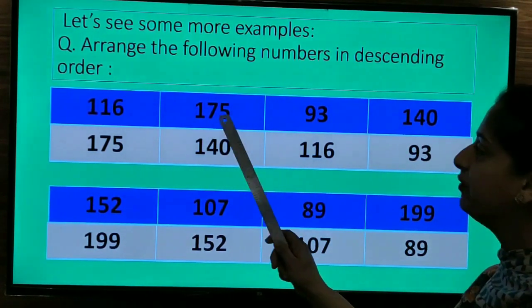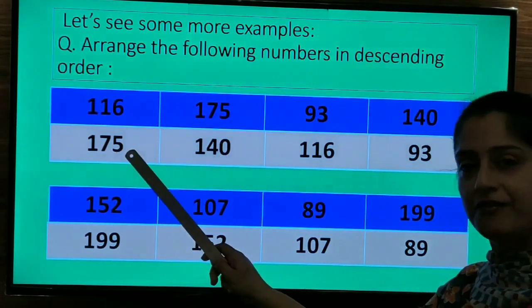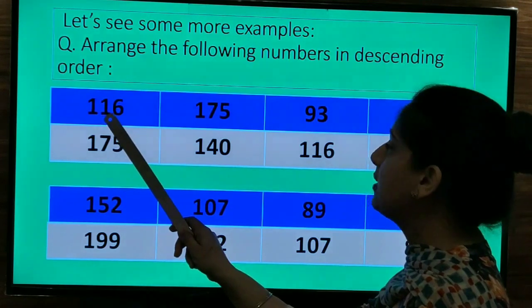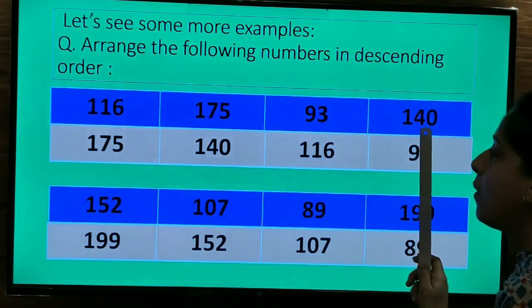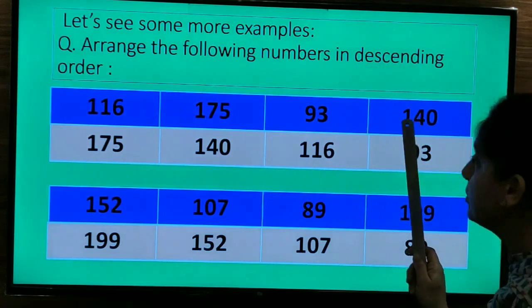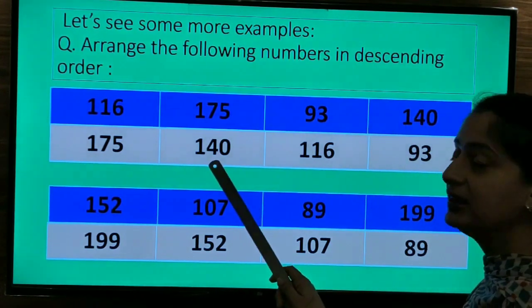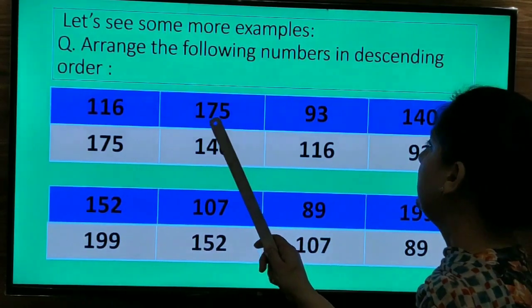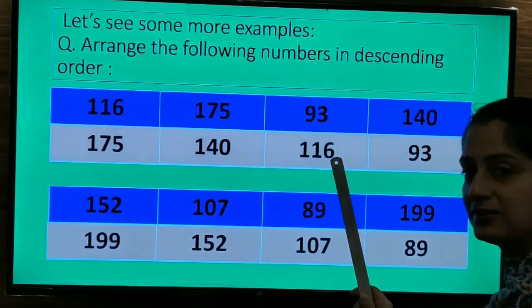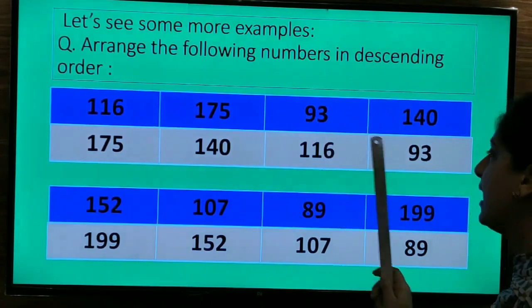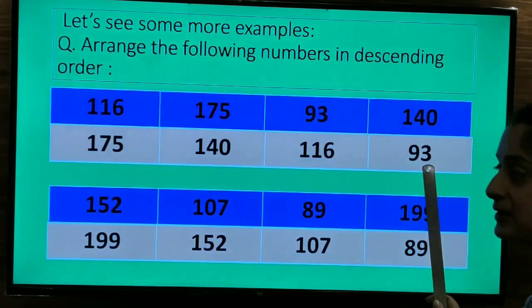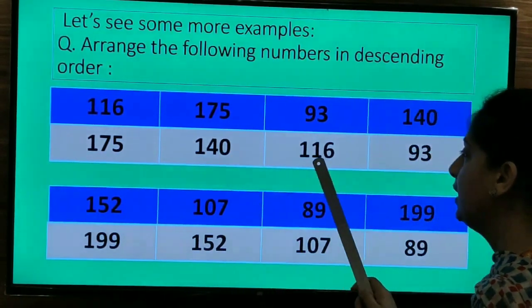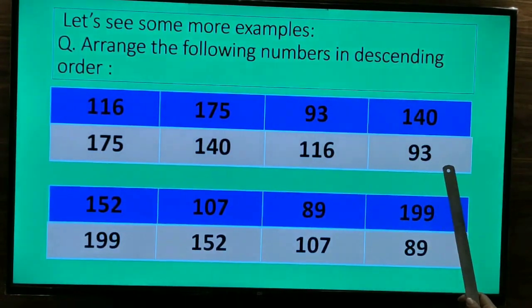7 will place 175 in the first column. Next is 1 and 4. So which one is bigger? 4. So we will place 140 in the next column. Next will be 116. We will place 116 next and 93 is the smallest. So our descending order will be 175, 140, 116 and 93.